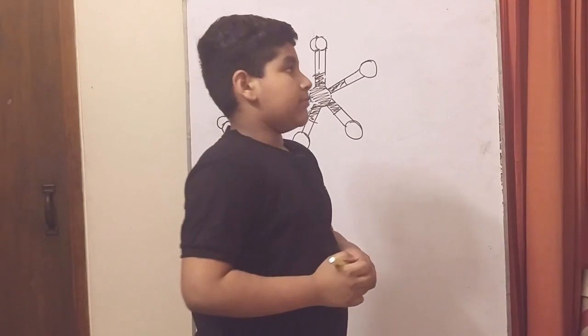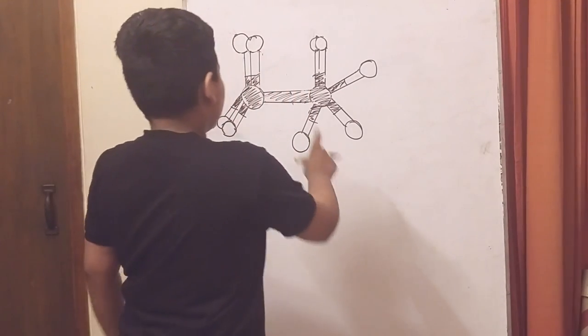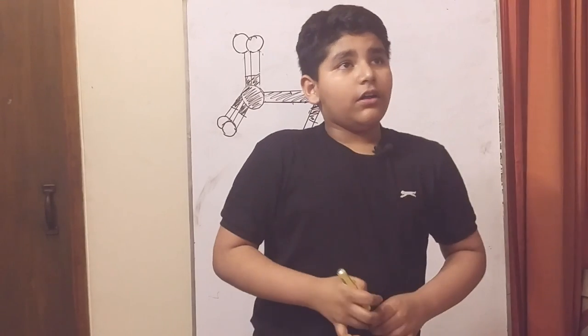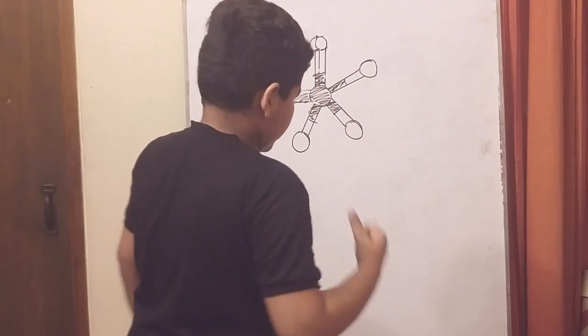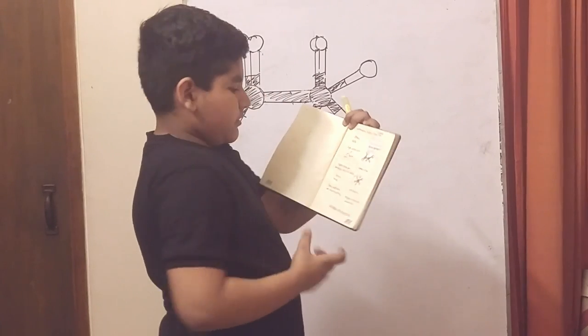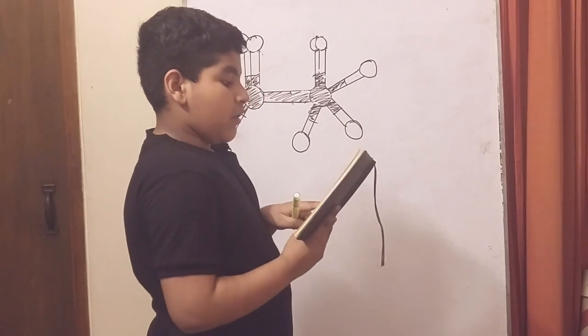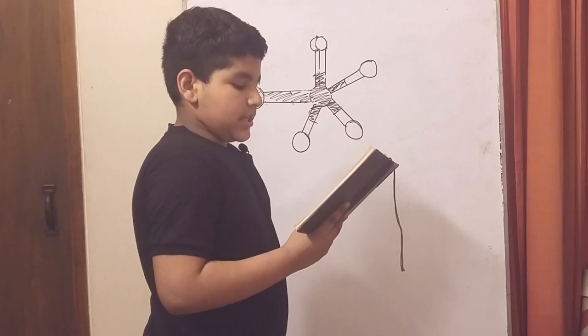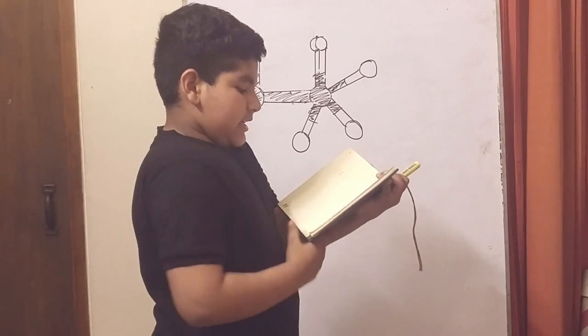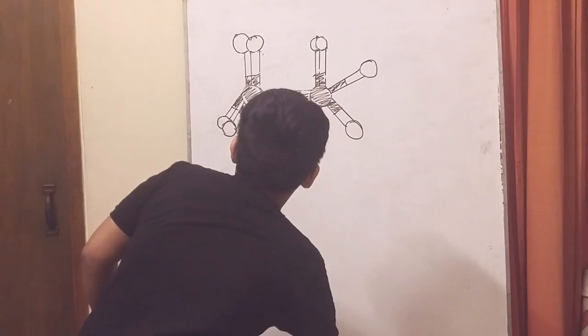Ethane is comprised of single covalent bonds or sigma bonds. If we recall from my previous videos, sigma bonds are overlapping molecular orbitals that let the molecule rotate freely. So each of these bonds are constantly rotating.